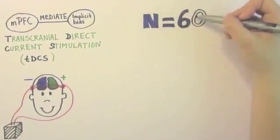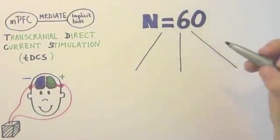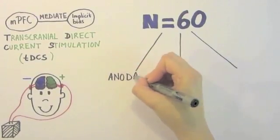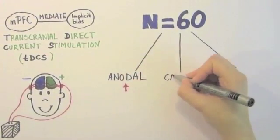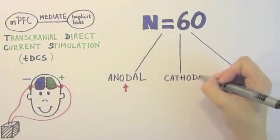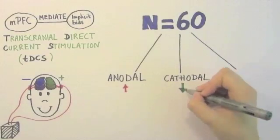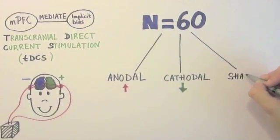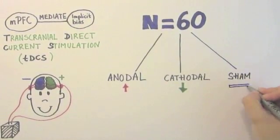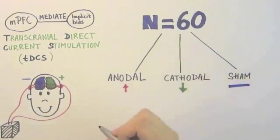In our study, 60 participants were randomly assigned to three conditions. They received either anodal stimulation, which increases cortical excitability, cathodal stimulation, which decreases cortical excitability, or sham stimulation, where the participant feels as if he or she receives stimulation, but in fact does not.